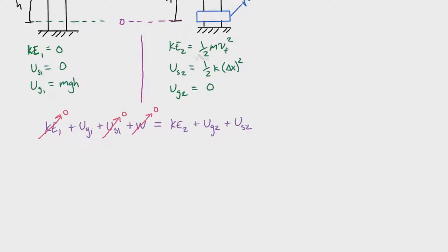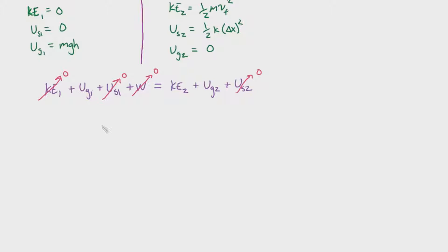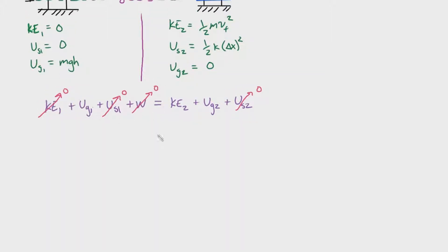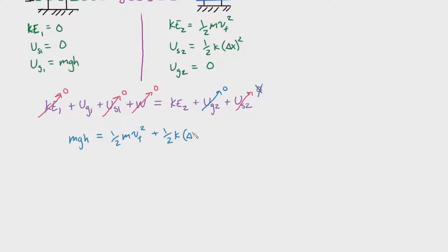For state two, we have a value for KE₂ and spring potential, but gravitational potential is zero. I need to correct an error here — the spring potential in state two is not zero; it is one-half k delta x squared. So our simplified conservation of energy equation becomes: mgh equals one-half mv_f squared plus one-half k delta x squared.